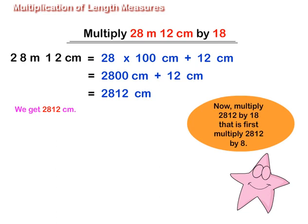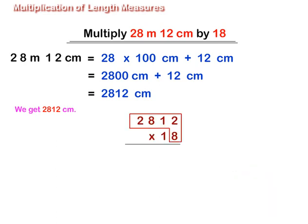Now multiply 2812 by 18. First, multiply 2812 by 8. We get 22,496. Then multiply 2812 by 10. We get 28,120.